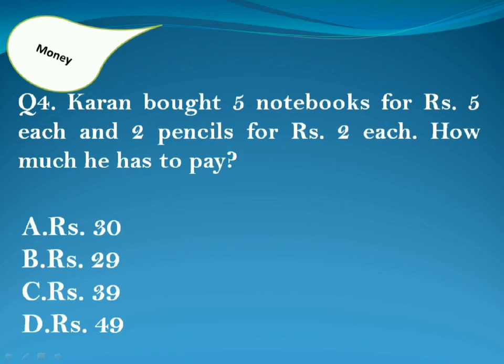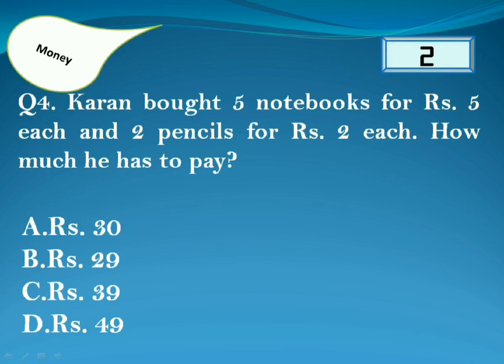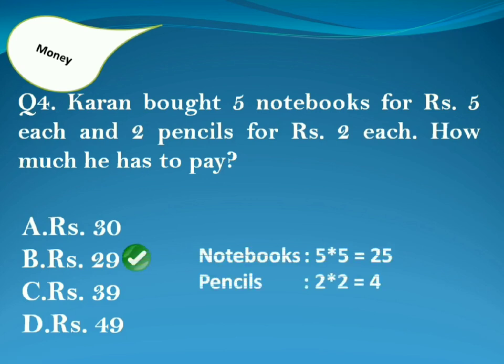Karan bought 5 notebooks for 5 rupees each and 2 pencils for 2 rupees each. How much does he have to pay? Answer is Option B. Because for notebooks, 5 into 5 is equal to 25, and for pencils, 2 into 2 is equal to 4. Total is 29 rupees.